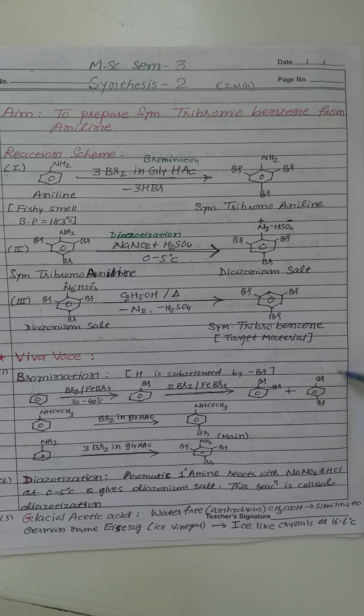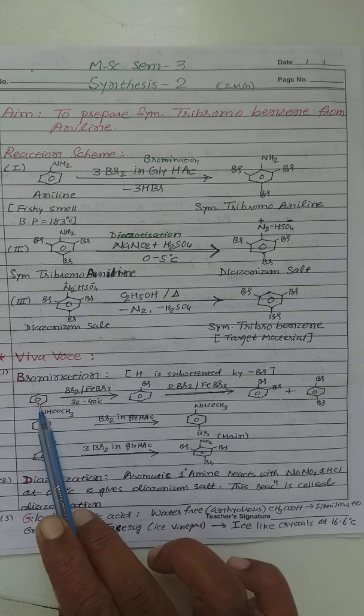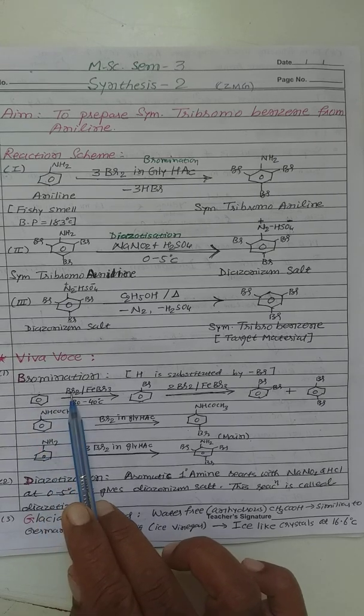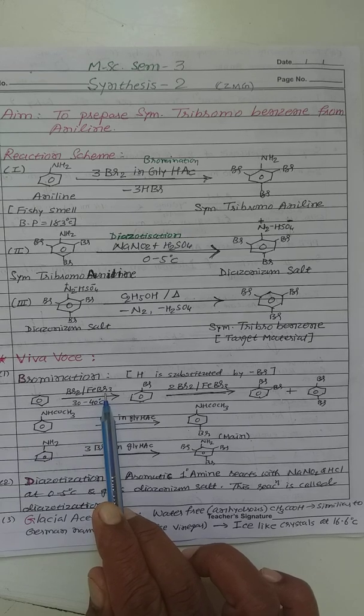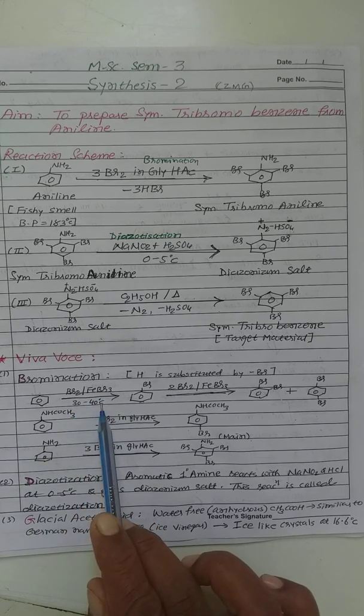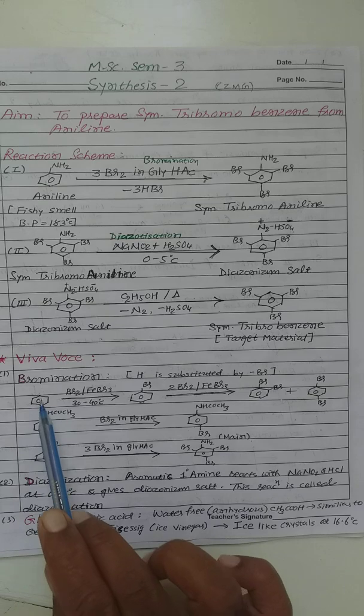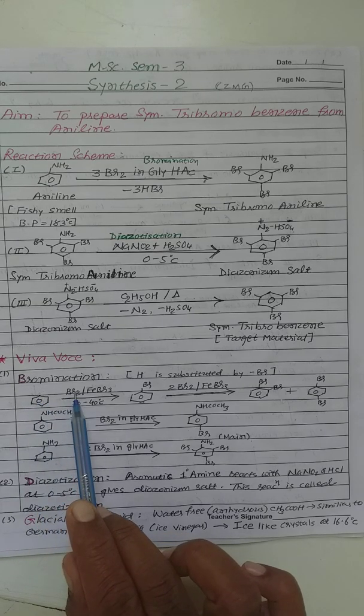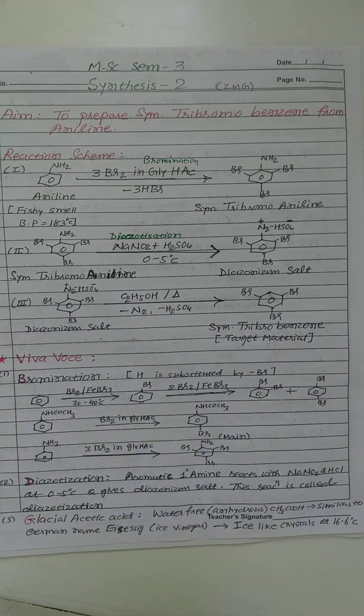Here some of the example of bromination chemical reaction, suppose first number. Aromatic hydrocarbon benzene undergoes bromination chemical reaction in the presence of bromine and catalyst FeBr3 at 30 to 40 degree celsius temperature. Hydrogen of benzene is substituted by bromine and we will get bromobenzene.